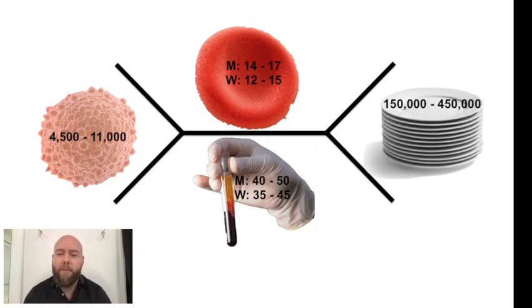And just remember that men are 2 above, women are 2 below. So, men normal is 14 to 17 hemoglobin, women is 12 to 15, 2 below.